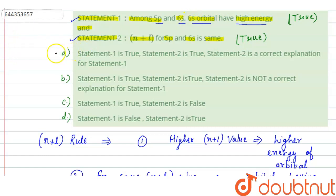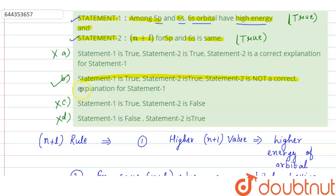So option A will be wrong because statement 2 is not the correct explanation for statement 1. Option B will be the correct option: statement 1 is true, statement 2 is true, and statement 2 is not the correct explanation for statement 1. Option C is wrong because statement 2 is not false, and option D is also wrong because statement 1 is not false. The correct answer is option B.